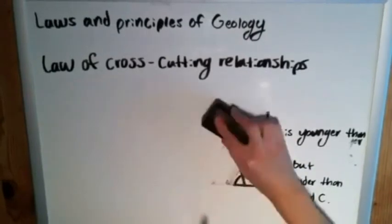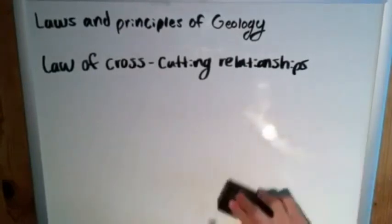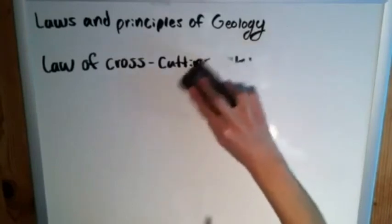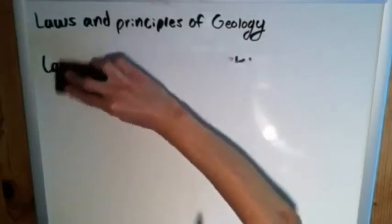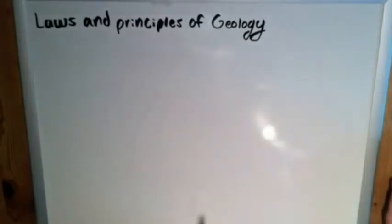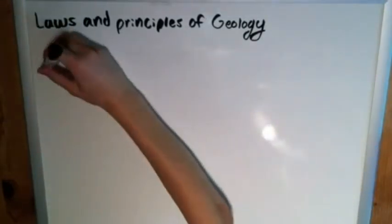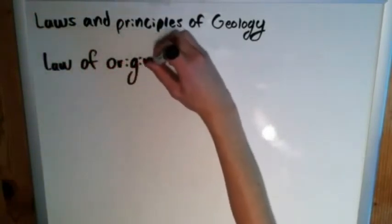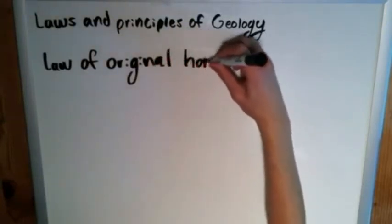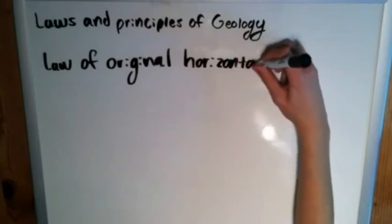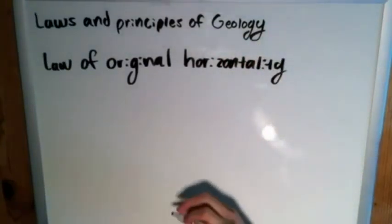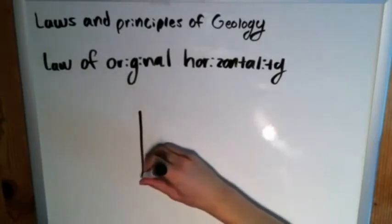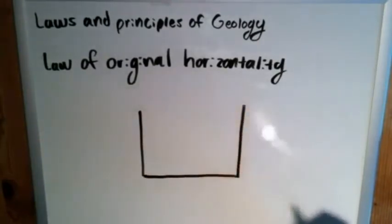Now there's a final law to go into and that is, it's a slightly different one and that it deals mostly with events. While we've been detailing, you know, saying this rock is older than that rock, this one, the law of original horizontality, gives us slightly different information. And it simply states that for sedimentary rock, when they are deposited, they are deposited close to horizontally.